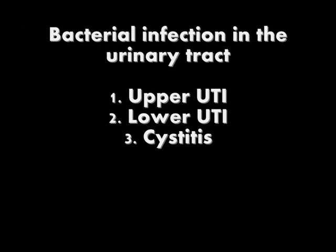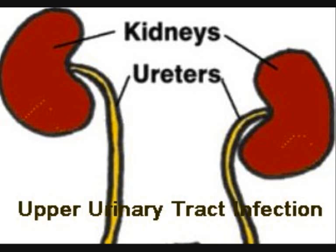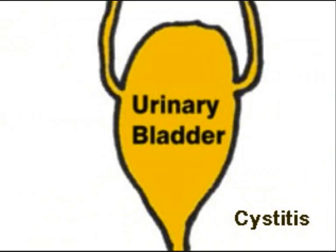So what is urinary tract infection? It is a bacterial infection along the urinary tract. It can be classified into three categories: upper urinary tract infection, cystitis, or lower urinary tract infection. For the upper infection, the affected organs are the kidneys and the ureters. For cystitis, the infection occurs in the bladder. As for the lower infection, the urethra becomes infected.